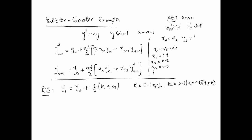With x0 = 0 and y0 = 1, k1 = 0. That implies k2 = 0.1 * (x0 + 0.1) * (y0 + k1) = 0.1 * 0.1 * 1 = 0.01. So k2 = 0.01.